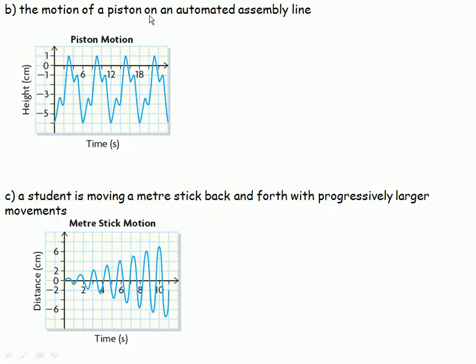The motion of a piston on an automated assembly line is drawn here. While it's not the same kind of periodic motion as was in the last graph, this is still periodic. If we start right here and move through to there, that's one full cycle. And then moving through again, that's another full cycle. So this motion is periodic.